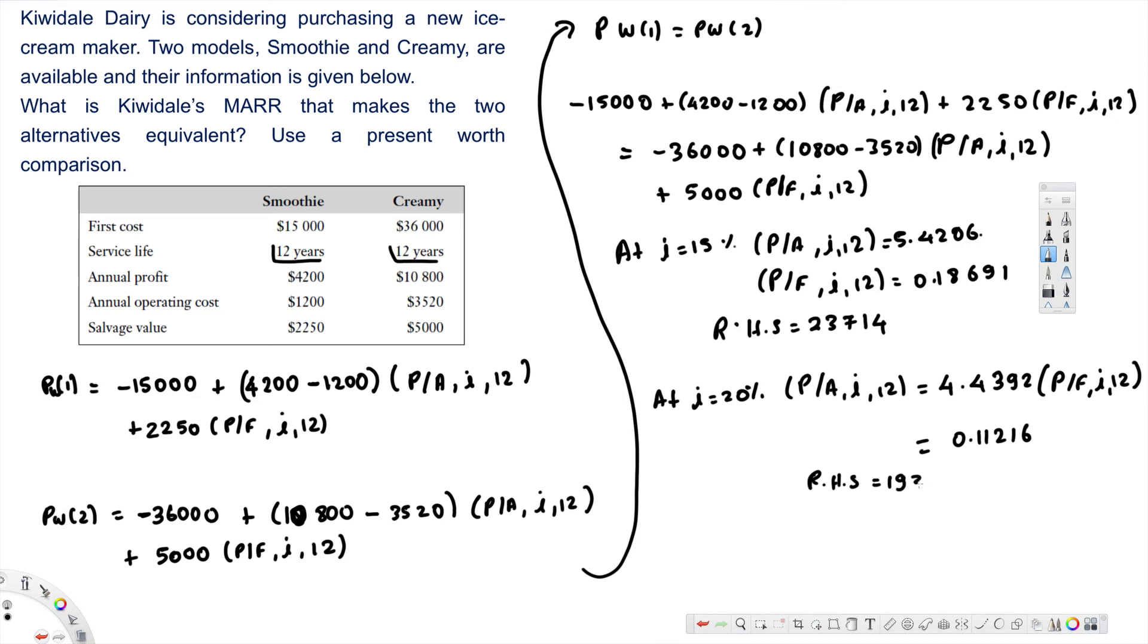Table with i and right-hand side. Let's fill it up: i is 0.15, we have $23,714. And we want to find out i when it's $21,000.